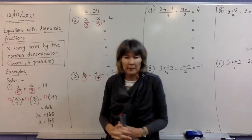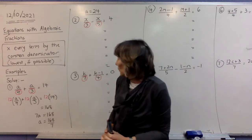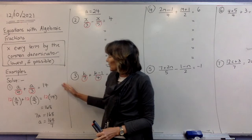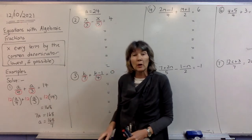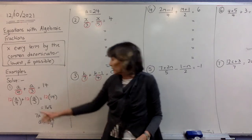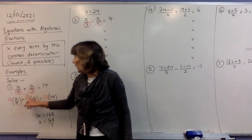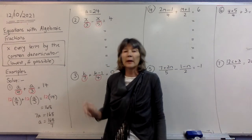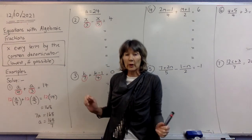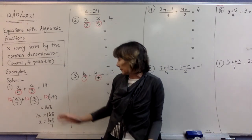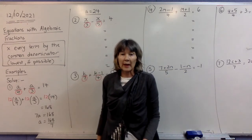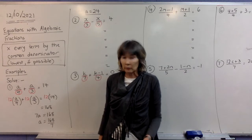Looking at this first question, all we do is look at the denominators: 4 and 3. Circle them with your red pen. Now we're looking for the lowest common denominator for 4 and 3 — that is 12.